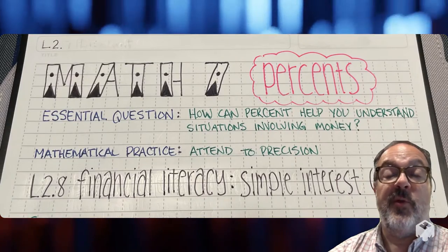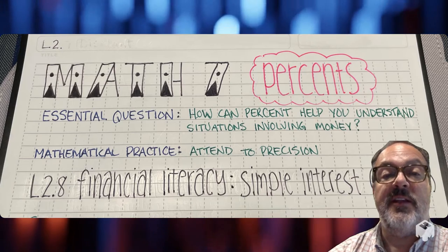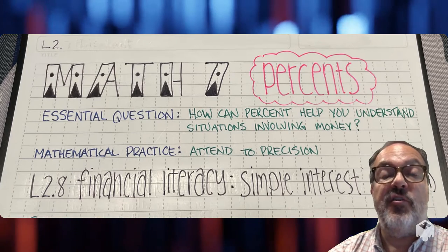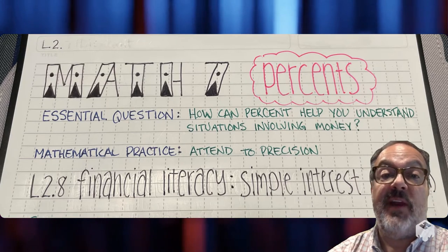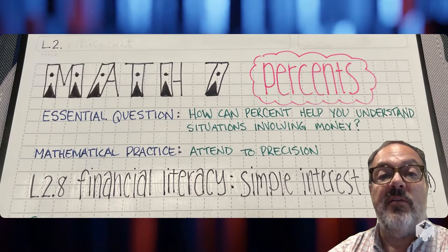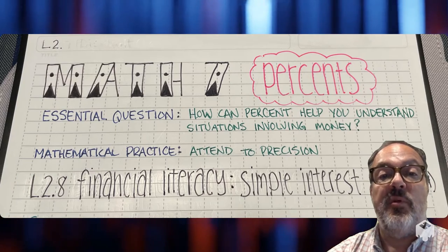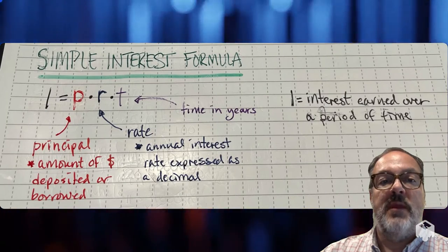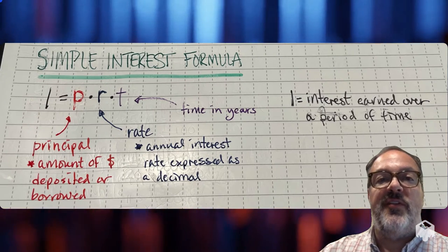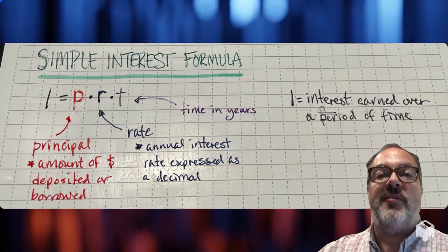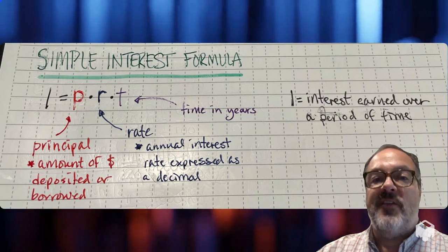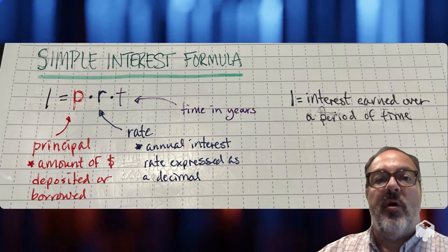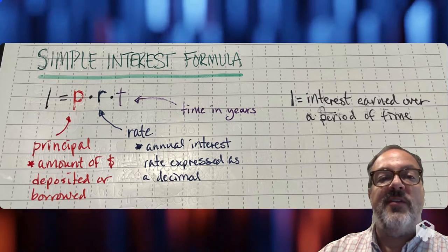So we've reached the last lesson in chapter 2, lesson 2.8, financial literacy, and we're going to take a look at simple interest. In this lesson, we're going to use the simple interest formula, and it's a fairly simple formula to use. We just need to know what all the different pieces are.